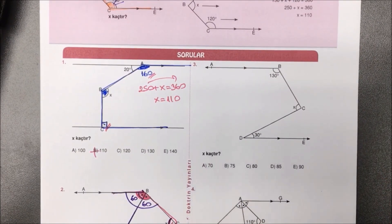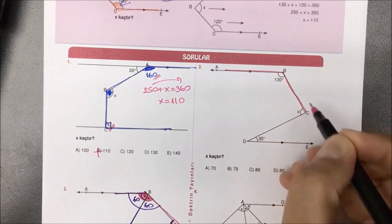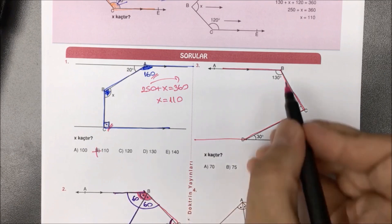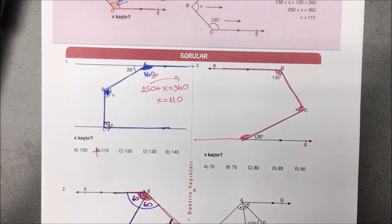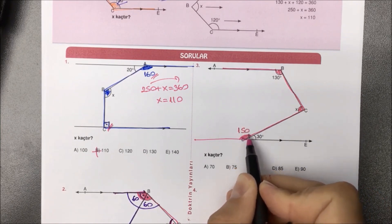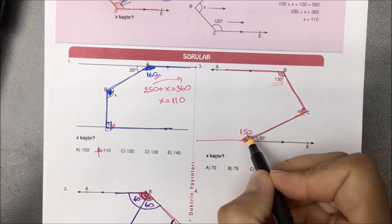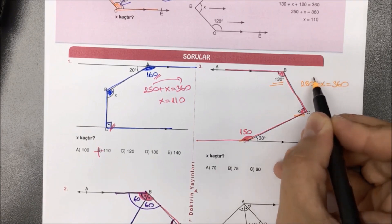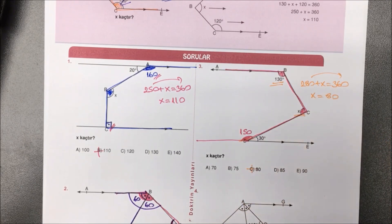Üçüncü örneğimize bakacak olursak verilenlere göre X kaçtır diye sorulmuş. Yine kalem ucundan çözmek istiyorum. Birincisi var, ikincisi var, ama kural tam olarak uymuyor. Bu çizgiyi paralellik doğrultusuna uzatırsak birinci açımızı, ikinci açımızı ve üçüncü açımızı bulmuş oluruz. Doğru açı kuralını kullanacak olursak 30'un sol tarafına 180'den 30 çıkartsak 150 kaldı. Kalem ucu kuralı gereği üçünü toplayacağız: 130 ile 150'yi topladık 280; X ile topladık 360. 360'dan 280'i çıkartırsak aradığımız yanıt 80 olarak bulunmuş olur.